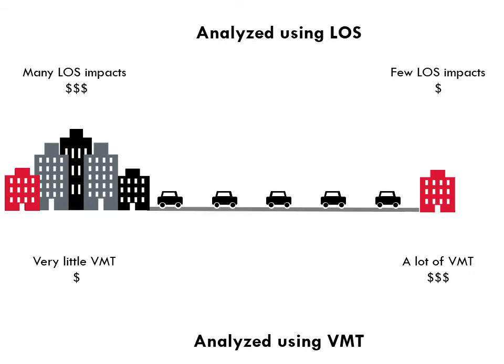How would the evaluation change if we switched to analyzing VMT instead of level of service? As we've seen, in a downtown location, using level of service to evaluate projects leads to many LOS impacts and high costs for the developer. If we analyzed VMT instead, we would find that projects produced very few vehicle trips because so many people can get there by walking, biking, or riding transit. The car trips that do arrive at the destination tend to be pretty short.